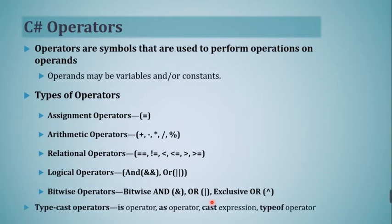The next type of operator is type cast operators. These operators are used for type checking or type conversion of operand types. There are four further types of type cast operator: the 'is' operator, the 'as' operator, the cast expression, and the 'typeof' operator. We will discuss in the next lecture in detail how to use these operators wherever they are required.